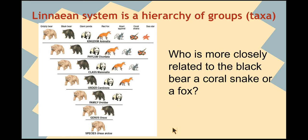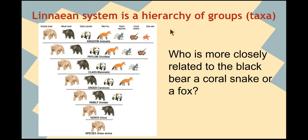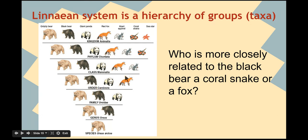Here's a comprehension check. Use this diagram — notice at the top it has the names of the organisms and uses the same picture going down, with kingdom, phylum, and so on listed. Who is more closely related to the black bear: a coral snake or a fox? The answer is the fox. The black bear and the fox are in the same order together, whereas the black bear and the coral snake share only the same phylum — so the fox is much more closely related.